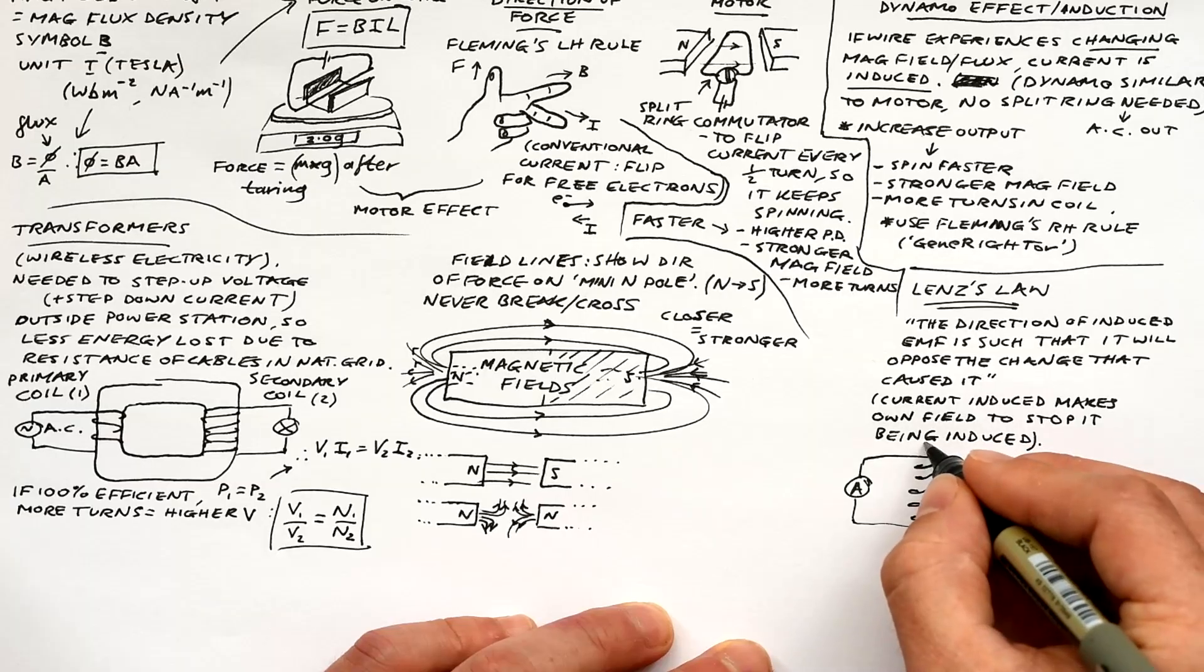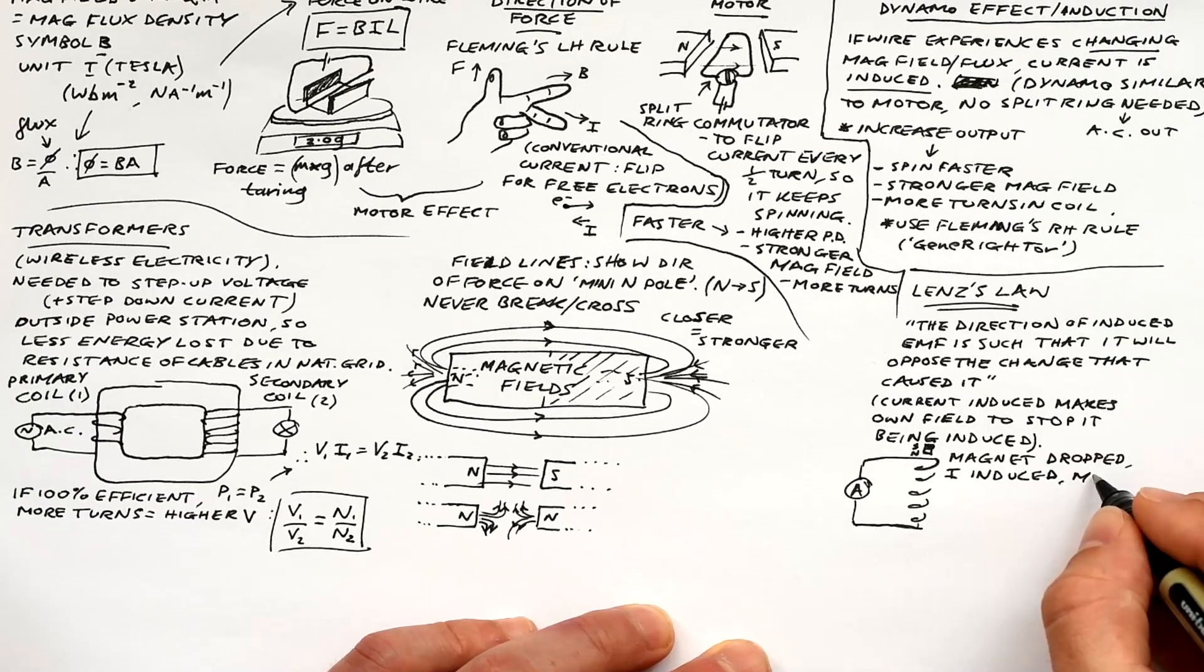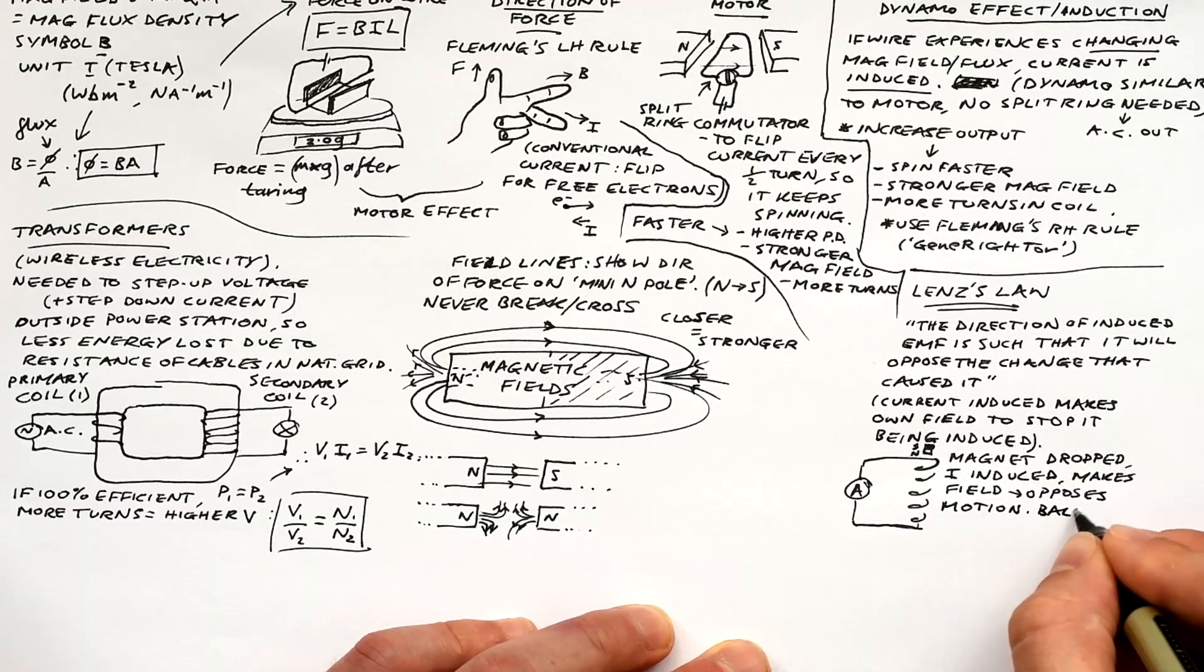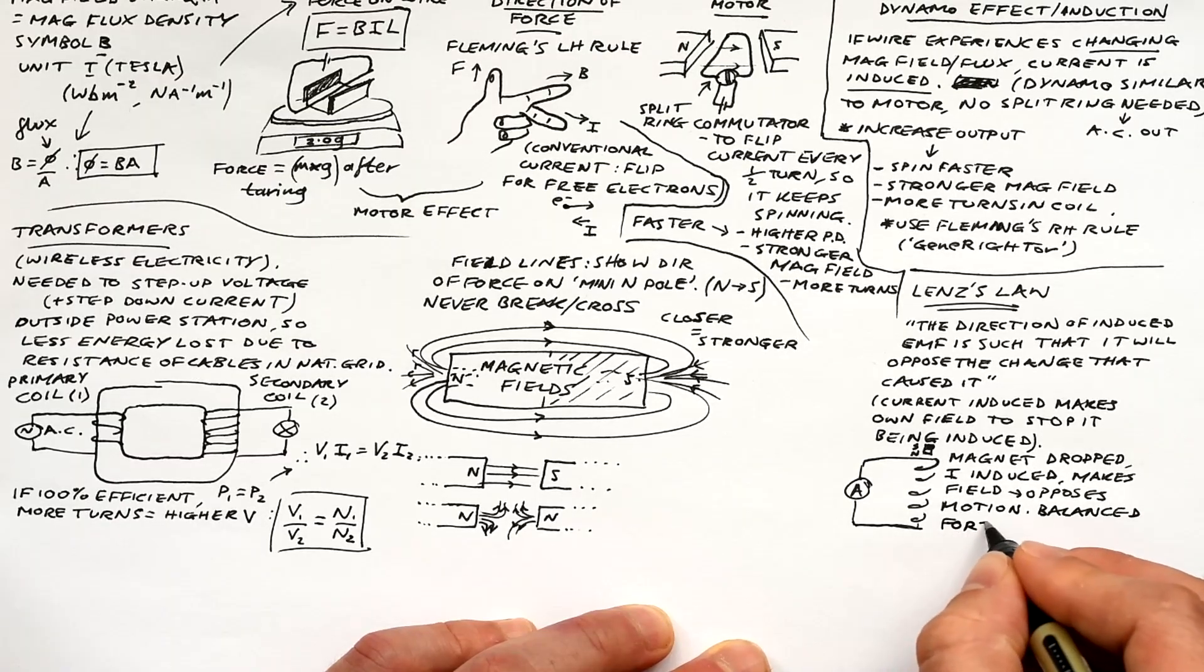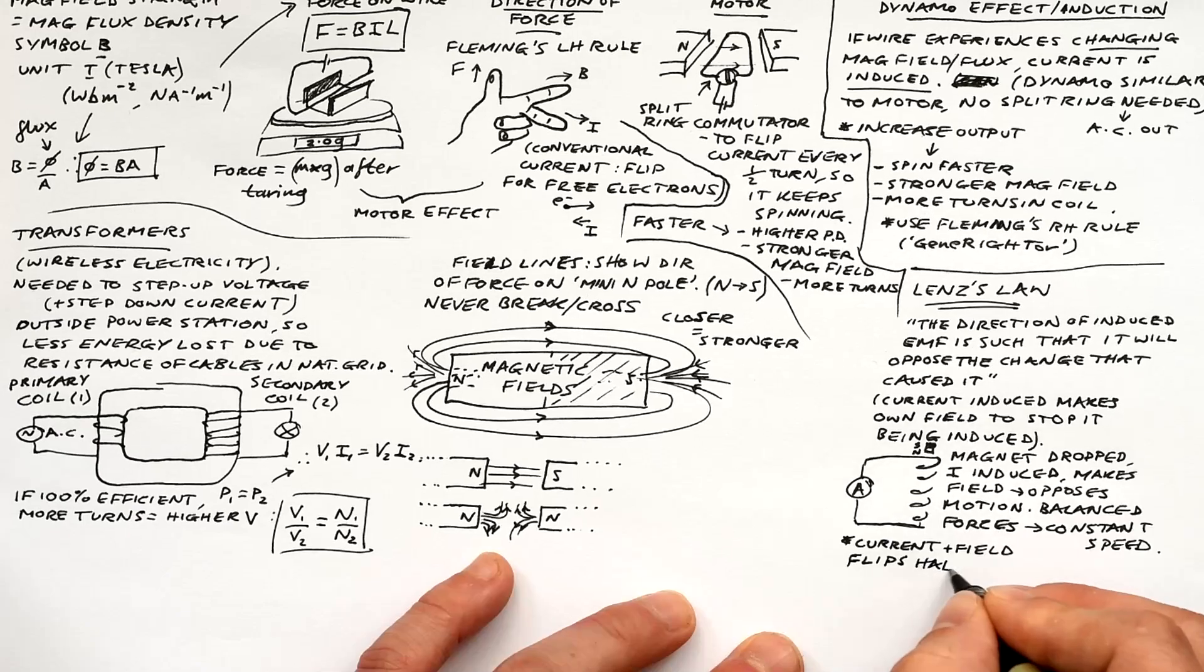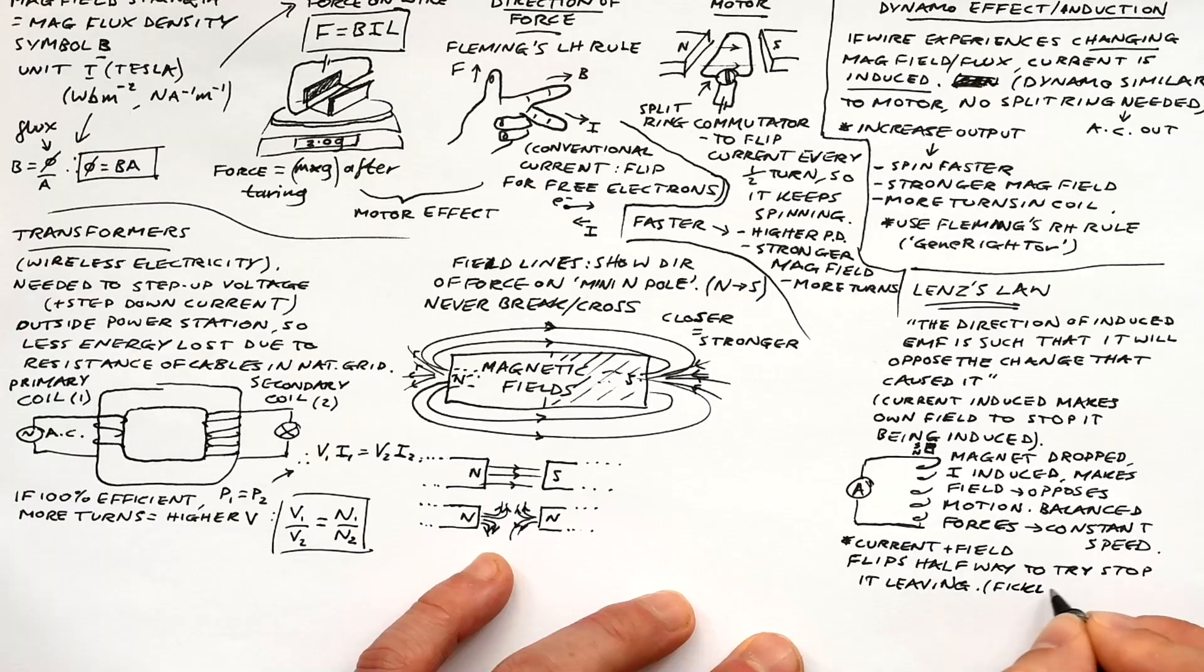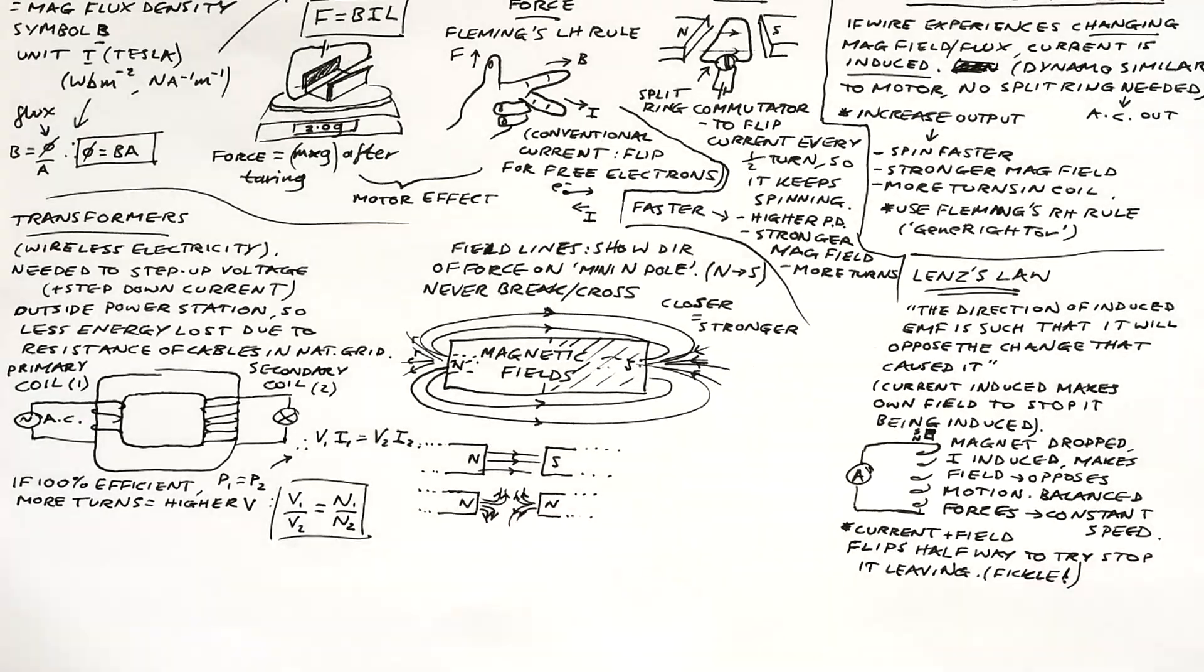Classic example of this is just a magnet and a coil of wire attached to an ammeter. And then we have a magnet being dropped through it. When the magnet's dropped, a current is induced and that will make the ammeter deflect one way. The current makes its own field that balances the weight of the magnet. Therefore we have balanced forces. So therefore it falls at a constant speed. And between the top and the bottom, the current will flip because it doesn't want the magnet to leave because induced currents are fickle like that. So the ammeter will deflect the other way as well. Once it's all the way out, the current will of course go down to zero again.